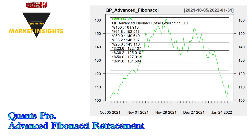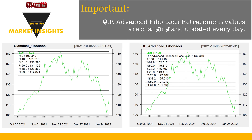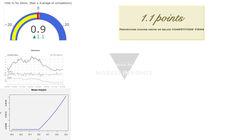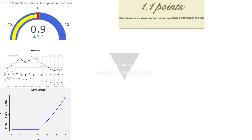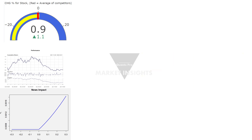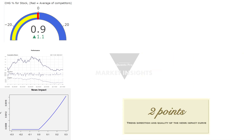The advanced Fibonacci retracement levels determined by Quants Pro analytics will change the arithmetic of winner and loser averages within the framework of game theory in favor of the investor. From the charts, it can be easily understood that the QP Advanced Fibonacci retracement can better detect significant price breaks. To create a clearer index in the investor's mind, Quants Pro offers a hybrid index consisting of cumulative return performance, proportional change to competitor returns, and news impact analysis.